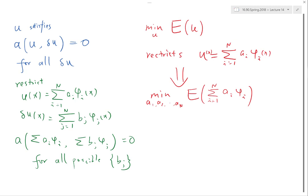Can you explain again how that's equal to many equations? That's because that equation has to be zero for all possible b_j's.